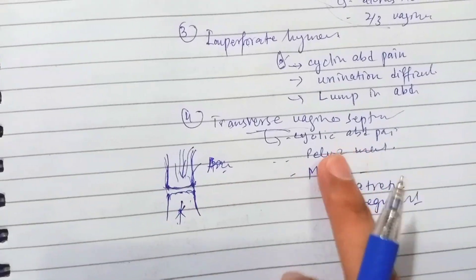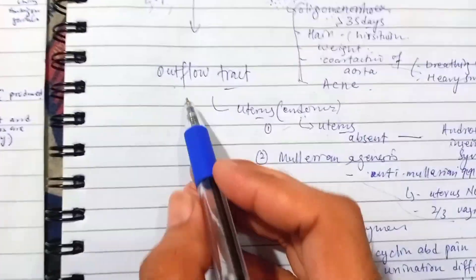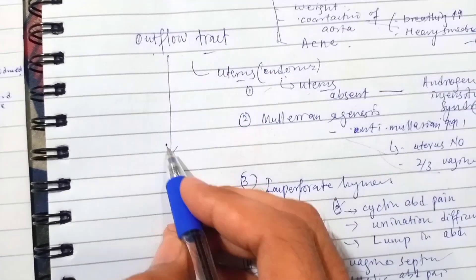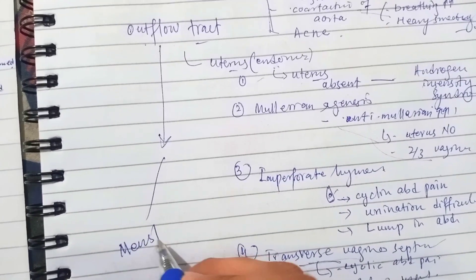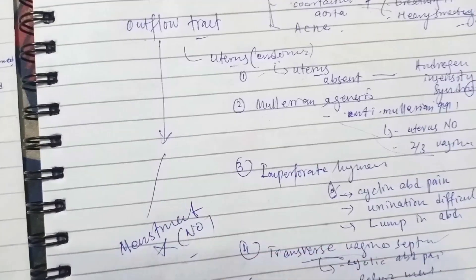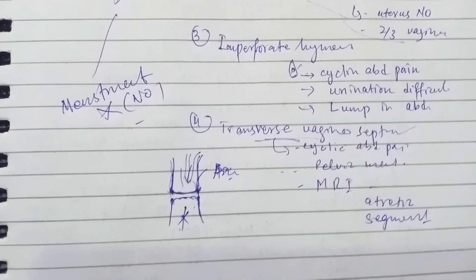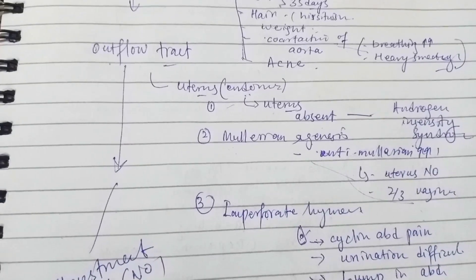So this is transverse vaginal septum. When these outflow genital tract problems are present, there is no menstruation. So we call this amenorrhea as present. These are the main causes of amenorrhea.